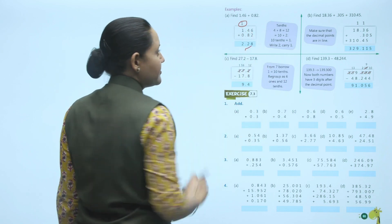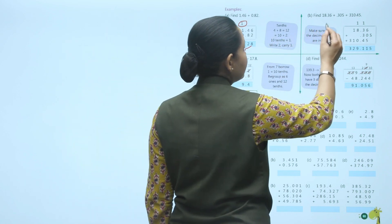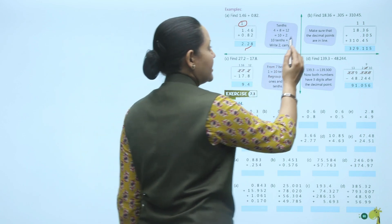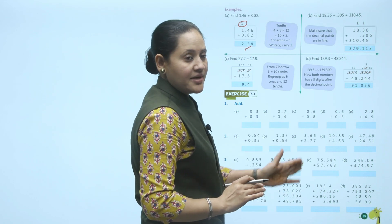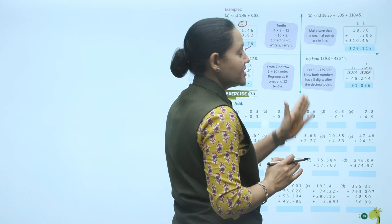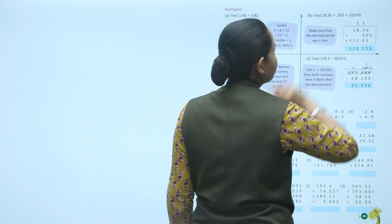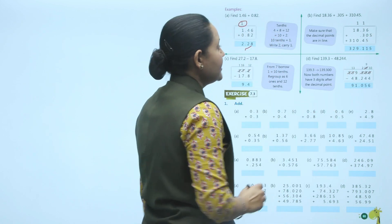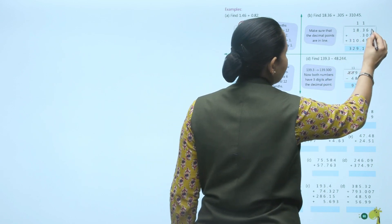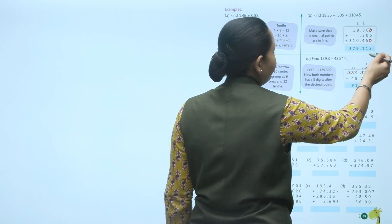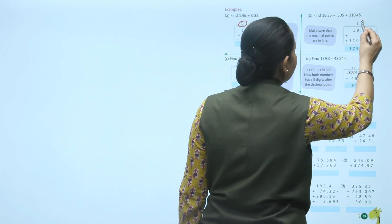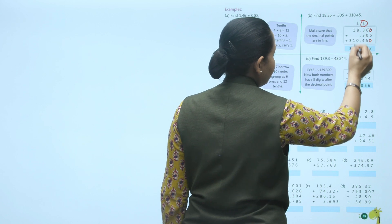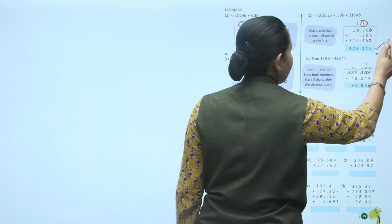Another addition example: 310.45 plus 18.36 plus 0.305. Make sure decimal points are aligned. Tenths below tenths, hundredths below hundredths, ones below ones, and so on. Adding column by column gives 329.115.